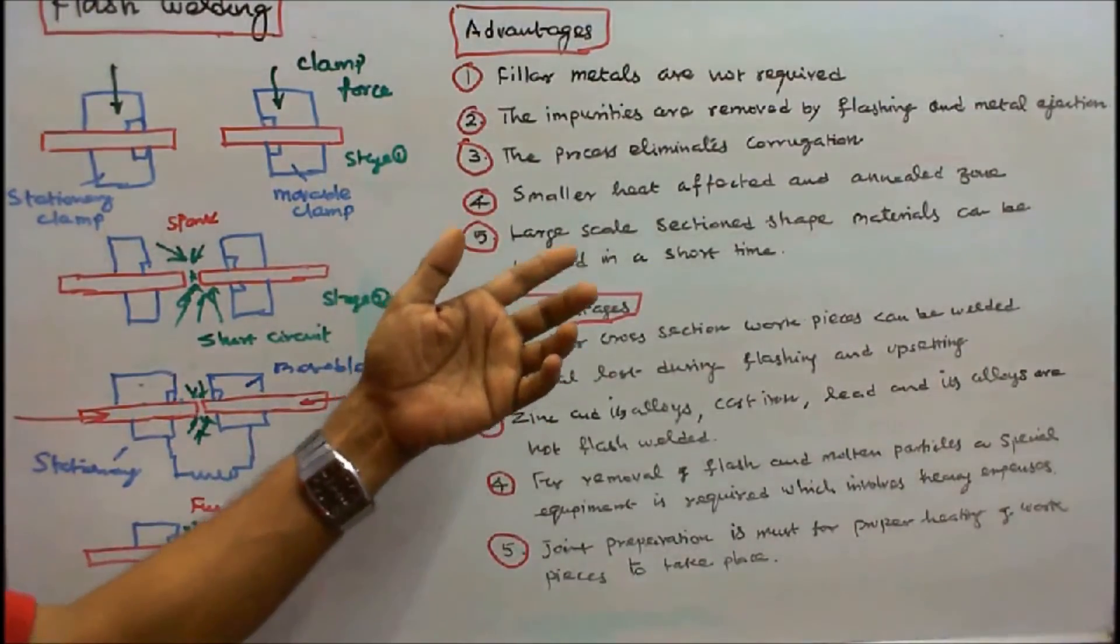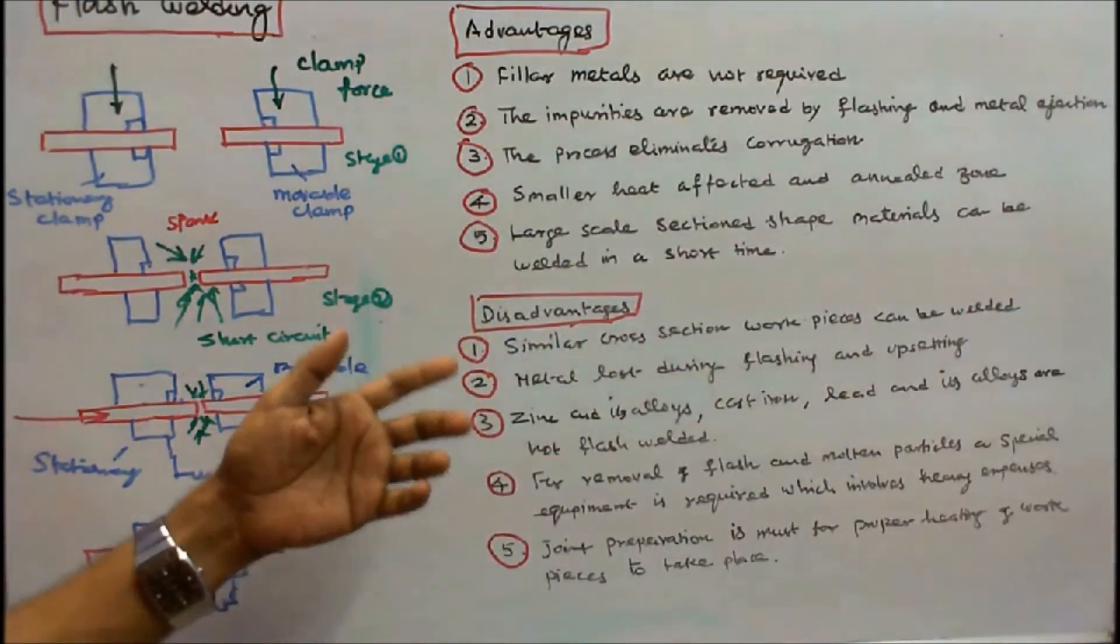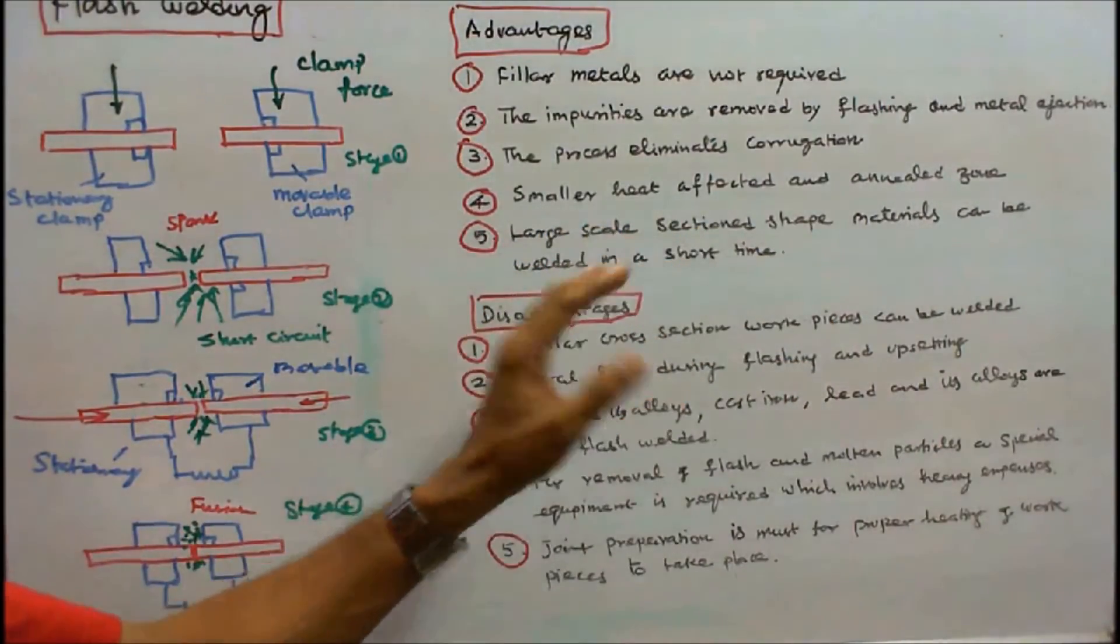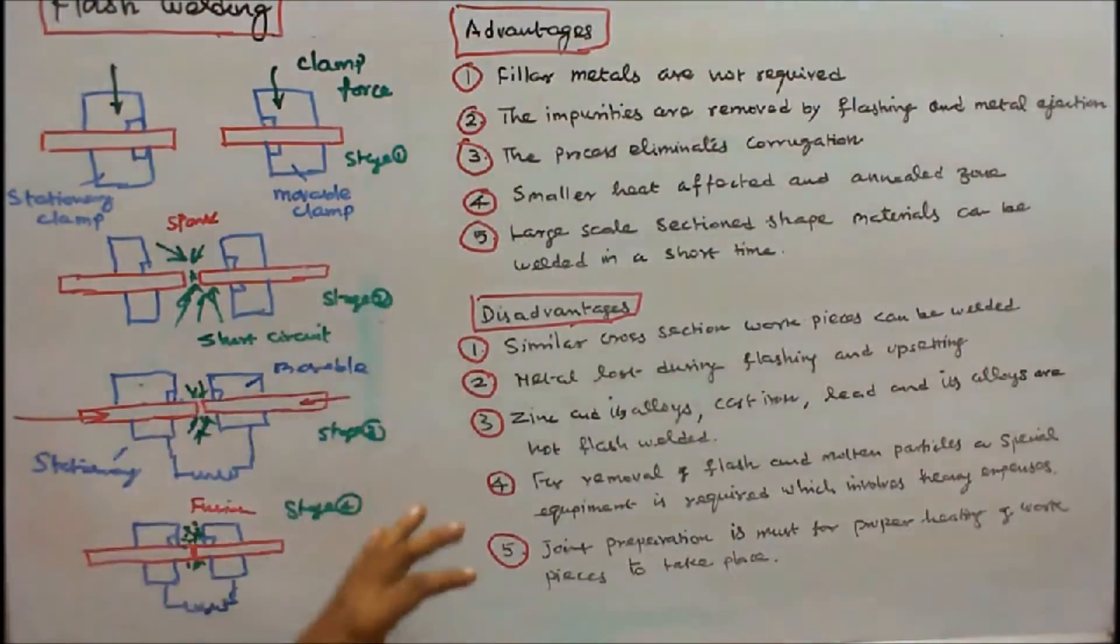5. Large scale section shaped materials can be welded in a short time. Disadvantages are: